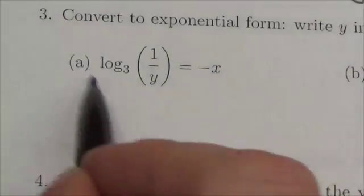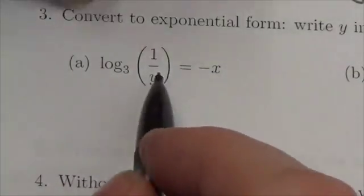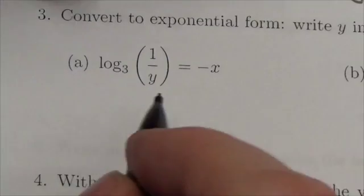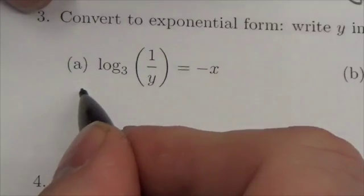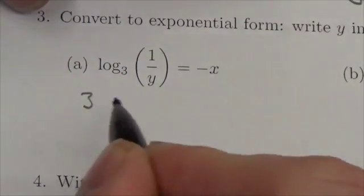Okay, so this is a logarithmic equation here. If I want to convert this to exponential form, I've got to note that the base of the logarithm will be the same as the base of the power. So that's going to be three.